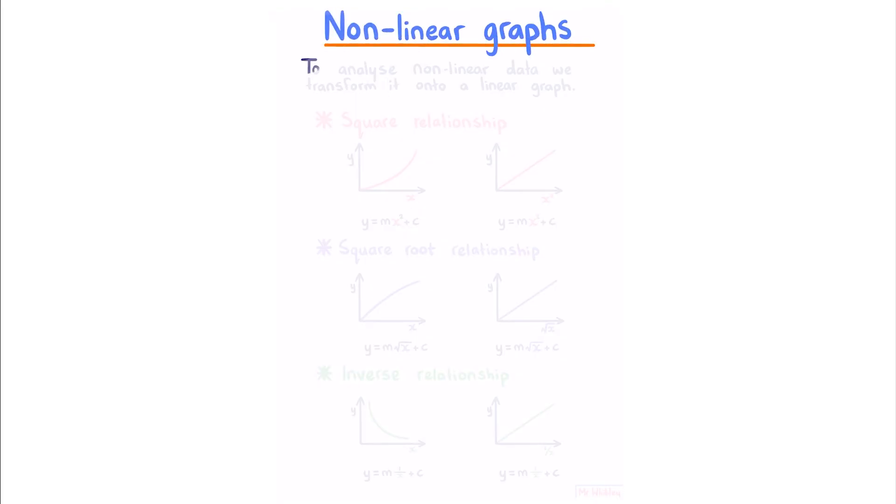Non-linear graphs. To analyze non-linear data, we transform it onto a linear graph. Let's start with a square relationship. A square relationship has this curve here, where the slope gets steeper and steeper, and we can write it in the form of y equals mx squared plus c. To make this graph linear, instead of plotting x, we plot x squared. This works because although there is a square relationship between y and x, there is a linear relationship between y and x squared. This logic is the same for all of the examples that follow.